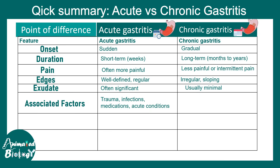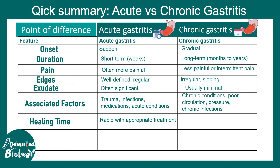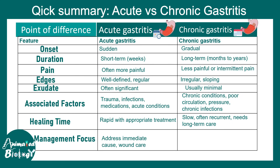Associated factors for acute gastritis include trauma, infections, medications like NSAIDs, and stress. Chronic gastritis is mostly associated with poor circulation, ischemia, H. pylori infections, or autoimmune conditions. Healing time in acute gastritis is rapid with appropriate treatment, but in chronic gastritis the healing time is slow and recurrent, requiring long-term treatment and follow-up.